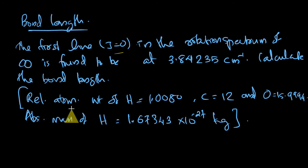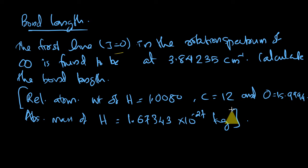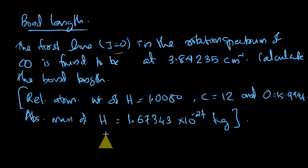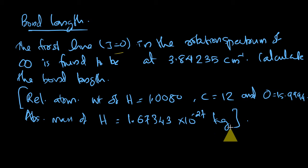Some supporting data is given for the calculation: the relative atomic weight of hydrogen is equal to 1.0080, of carbon is 12, and of oxygen is 15.9994. The absolute mass of hydrogen is equal to 1.67343 × 10⁻²⁷ kilograms.